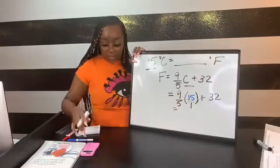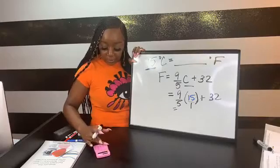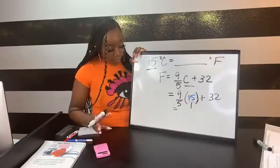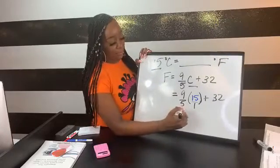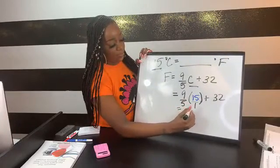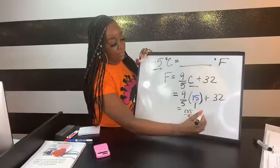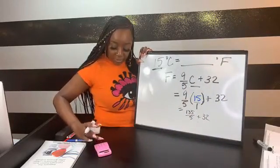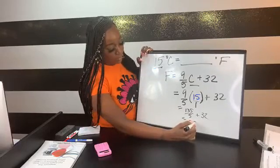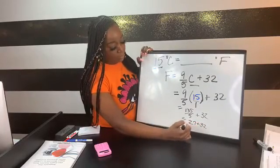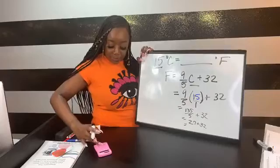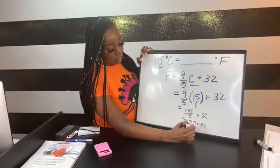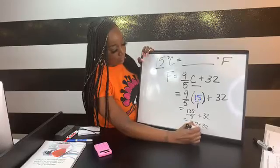We do nine-fifths times 15, which is put 15 over 1. We go top-top, bottom-bottom, so 9 times 15 is 135, and 5 times 1 is 5, plus 32. We do 135 divided by 5, which is 27, and then 27 plus 32 is 59. So, 59 degrees Fahrenheit.